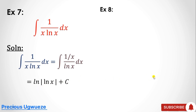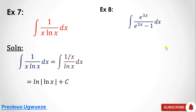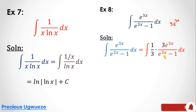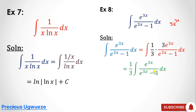Example 8: integrate e^(3x) over (e^(3x) − 1). Differentiating the denominator gives 3e^(3x), which is not exactly what we have in the numerator. So we multiply the numerator by 3 and compensate by multiplying by 1/3. We bring out the 1/3, the condition is satisfied, and the solution is (1/3)·ln|e^(3x) − 1| + C.